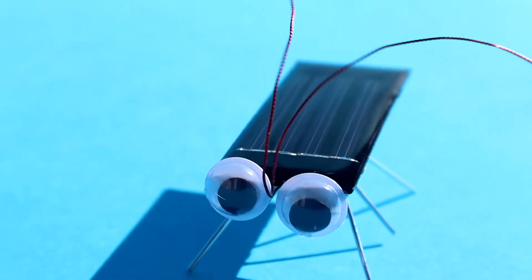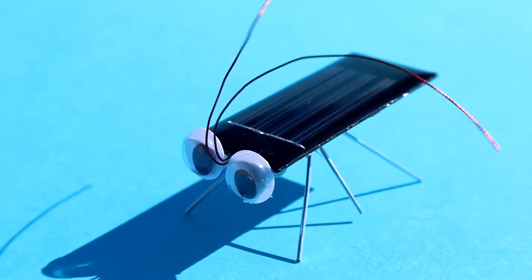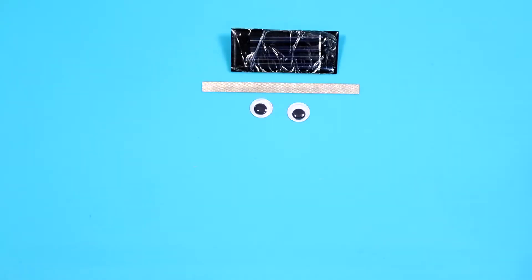Today we're going to build a solar cockroach. The kit includes a solar cell, maker tape, googly eyes, self-stick vibrating motor, paper clips, and magnet wire.